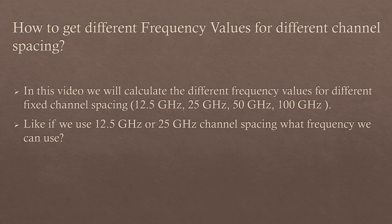Hello friends. Today we will discuss how to get different frequency values for different channel spacings. In this video, we will calculate the frequency values for different fixed channel spacings like 12.5 GHz, 25 GHz, 50 GHz, and 100 GHz. We will learn what the frequency values will be when using these fixed channel spacings.